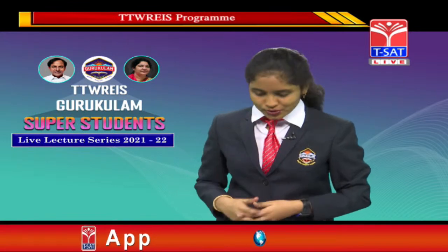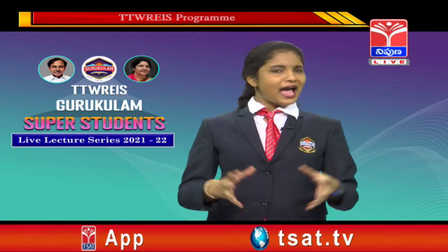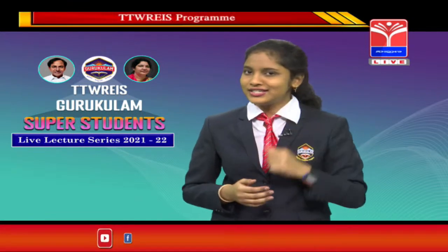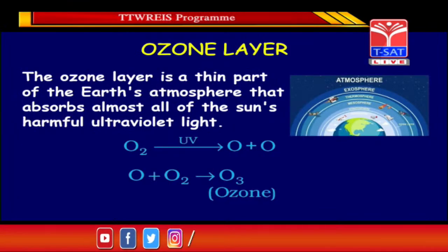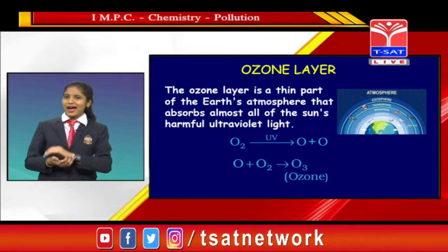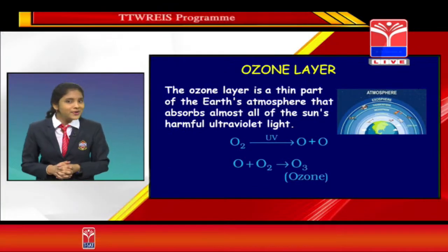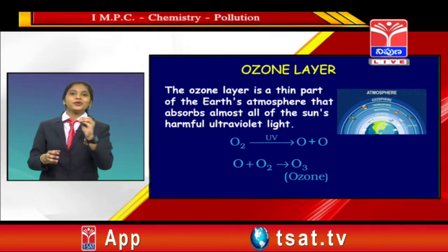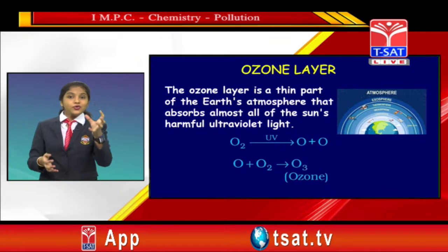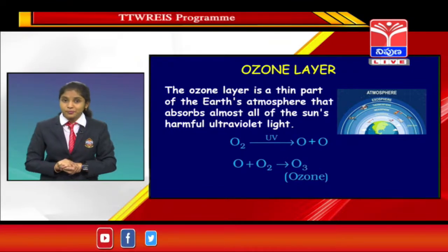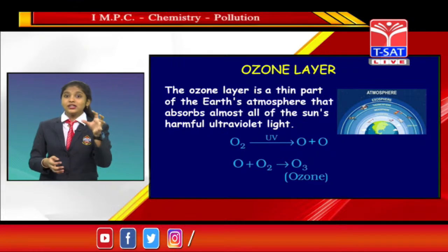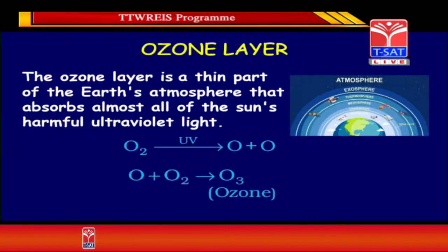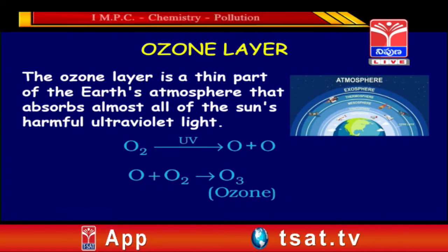Now let us discuss the ozone layer. In summer, we carry umbrellas or apply sunscreen to protect ourselves from harmful UV rays. The UV rays are generally absorbed by the protective layer present in the stratosphere, known as the ozone layer. Let us know how this ozone layer is formed. When oxygen absorbs UV rays, it splits into two nascent reactive oxygen atoms.